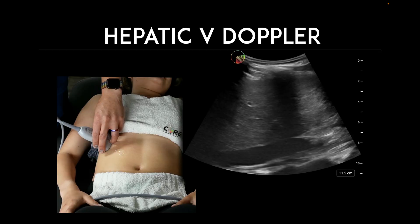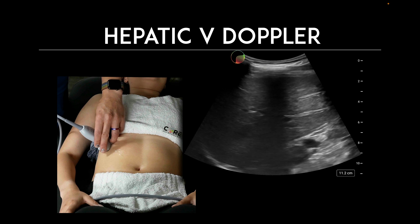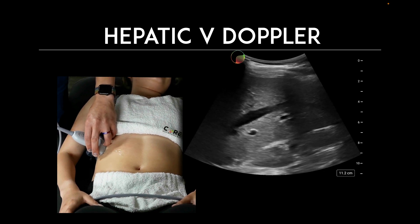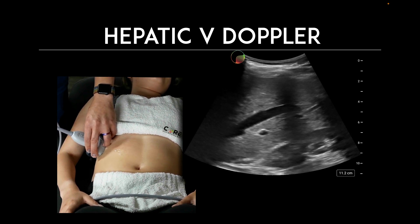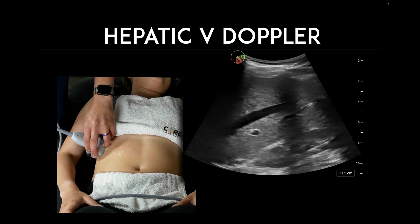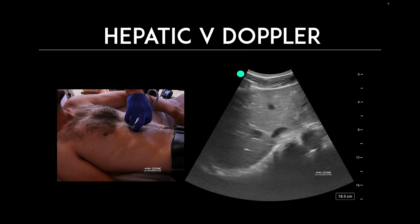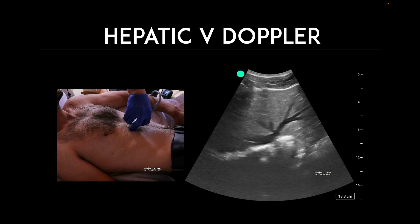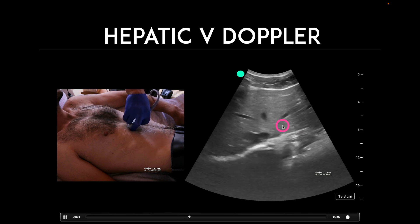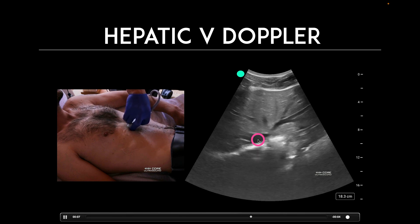Now let's talk about the hepatic vein — this one's probably the easiest one to obtain. These are going to be more thin-walled and are going to be aligned the same axis as the IVC. If you place the transducer with the probe marker facing up, you're going to see it in its long axis with thin walls. We don't see any hyperechoic walls relative to the portal vein, which has thicker walls. You can use this view or a more subcostal view, where we can see the hepatic veins going into the IVC.